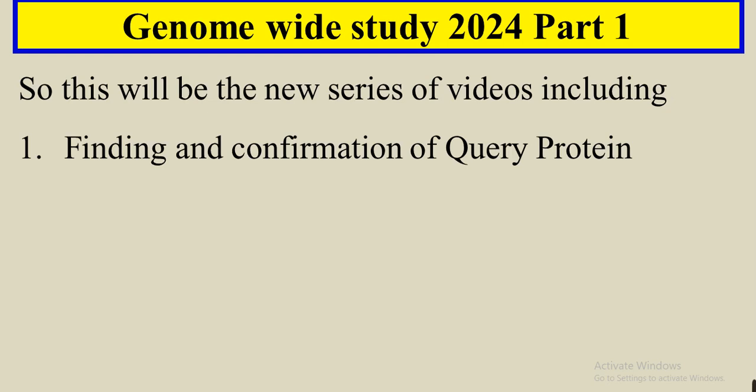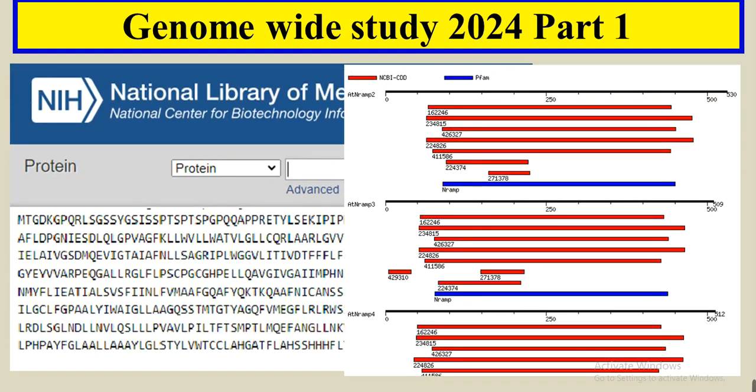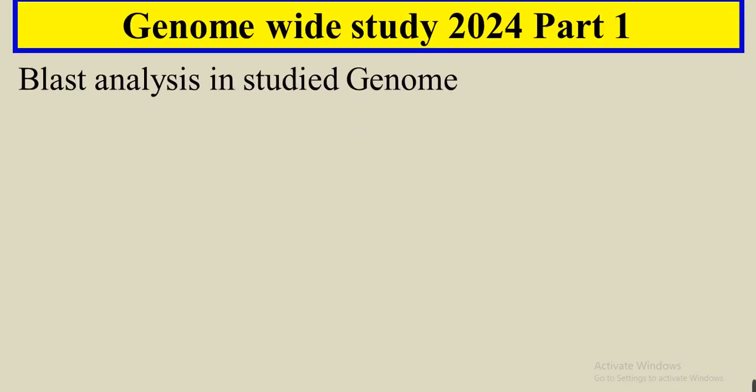This series includes these analyses. First, we have to confirm our protein family on which we have to do the genome wide analysis. Then we can find and confirm the query protein of that family through NCBI or genome database, and that query protein will be confirmed through their motif analysis. Then we have to do the BLAST analysis.